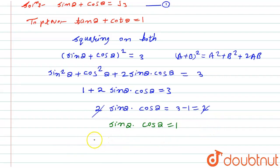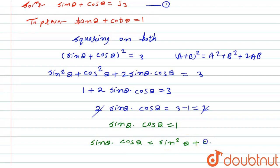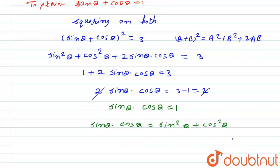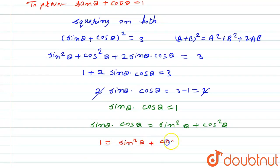Now as we know, one is nothing but sine squared theta plus cos squared theta. So I will put sine theta cos theta on the left, and in place of one I will again put sine squared theta plus cos squared theta. Taking sine theta cos theta to the other side, the equation becomes one equals sine squared theta plus cos squared theta divided by sine theta cos theta.